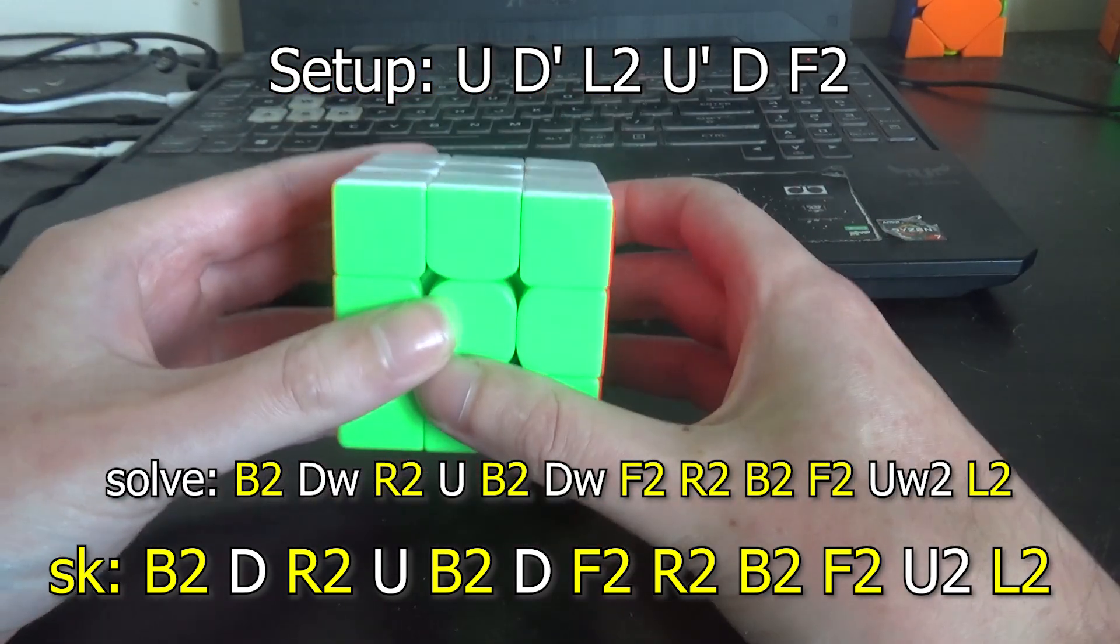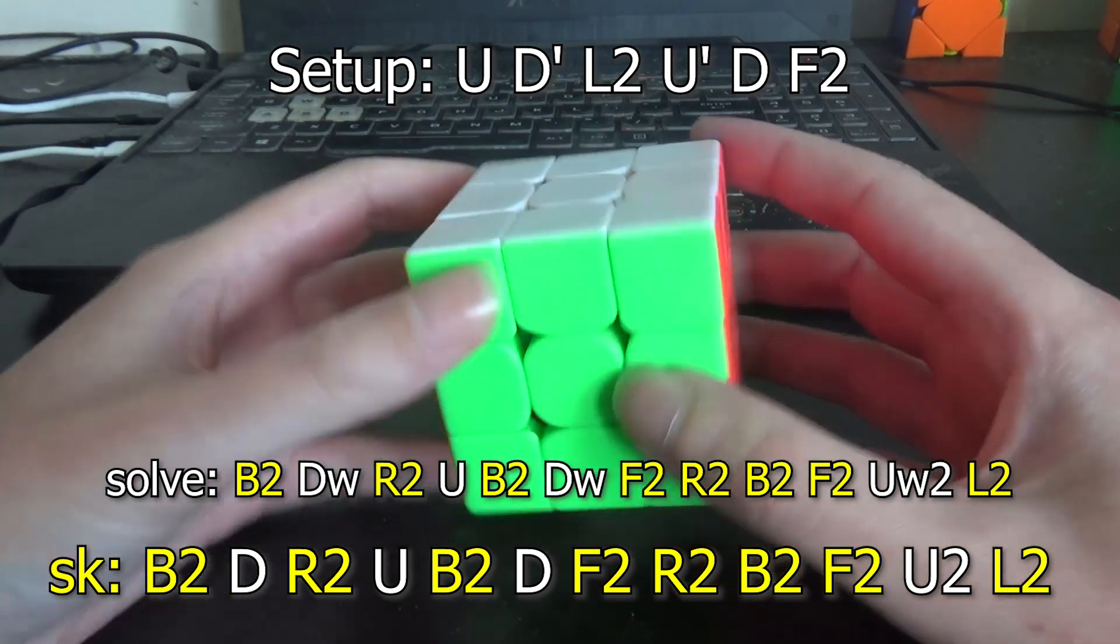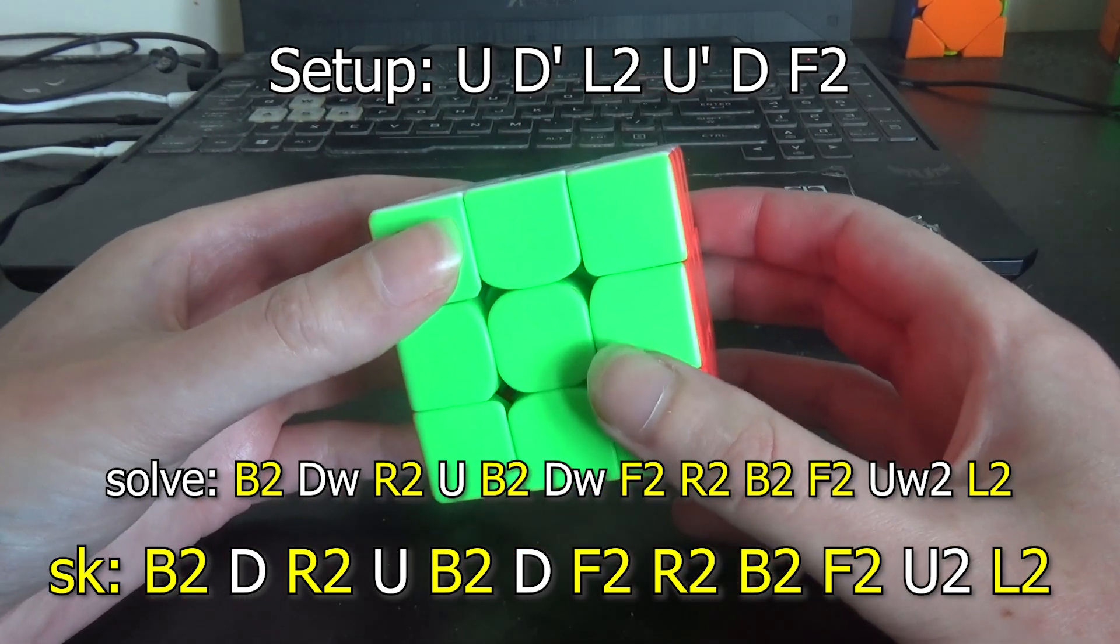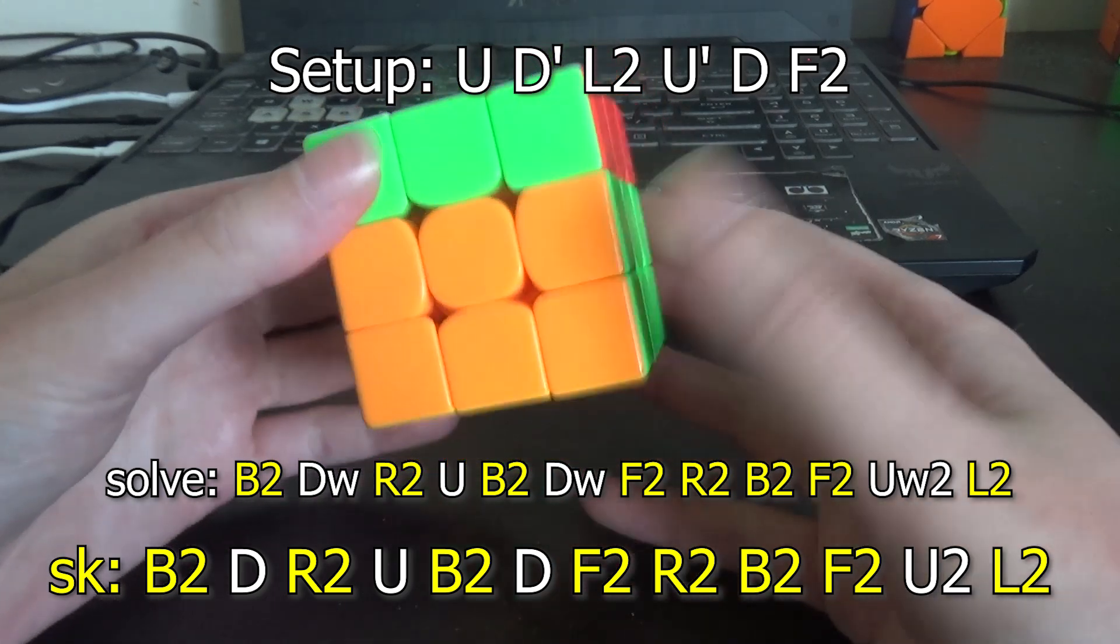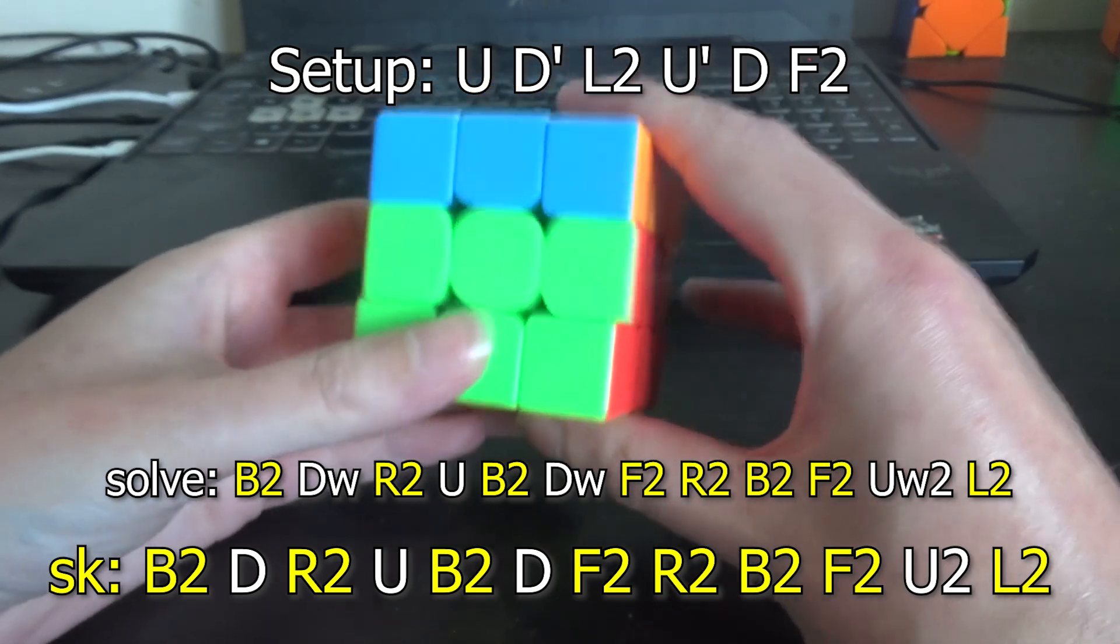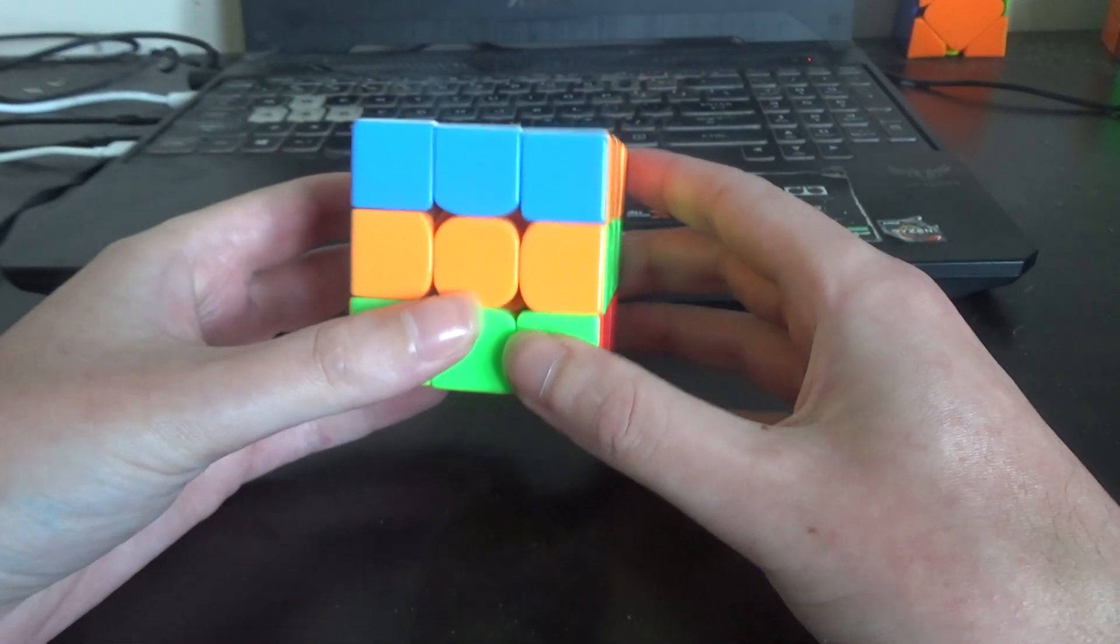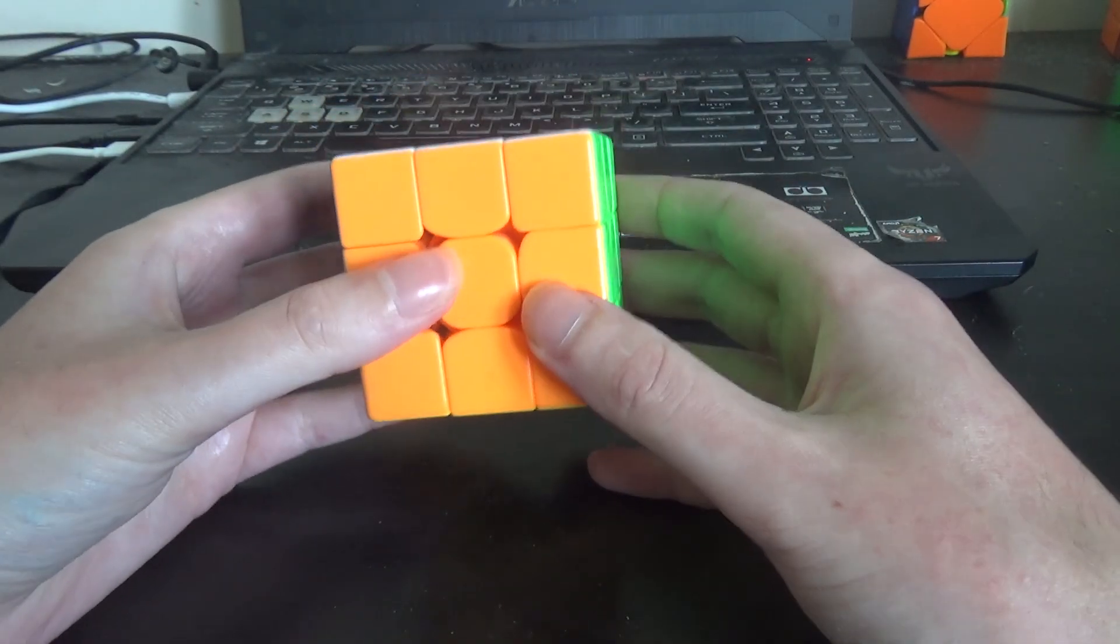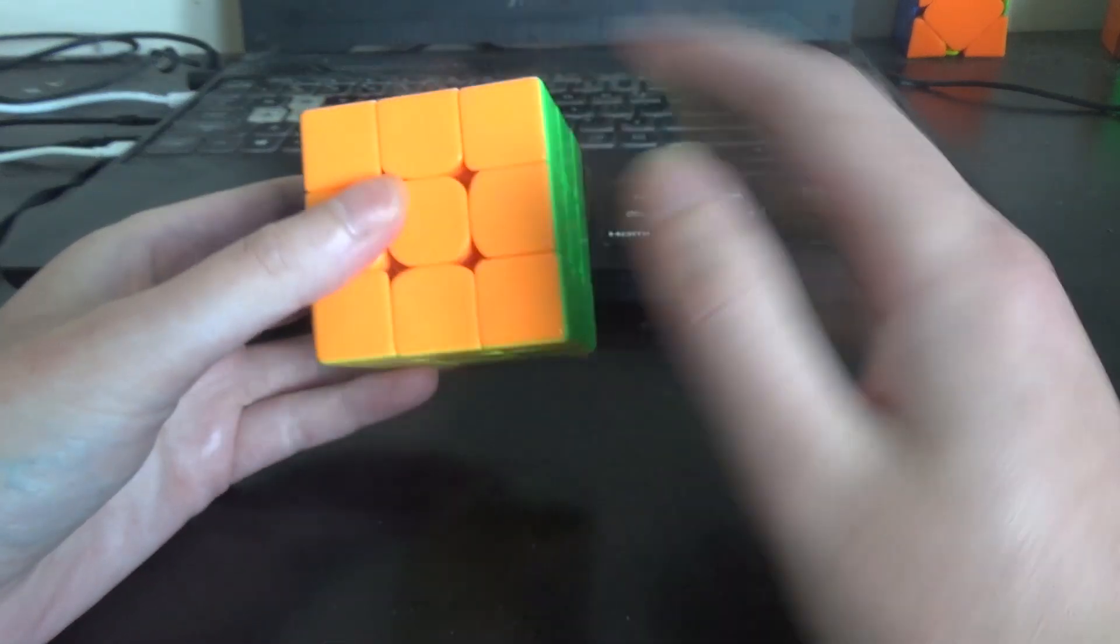So slice solved in zero moves. Very nice. Wide moves are actually legal in FMC so you could just write a W in front of those three moves we did and you'll have a valid solution. But if you were to say do an E after the U2, you would have to rewrite it as UD moves and replace like the F2s with L2s and whatnot.